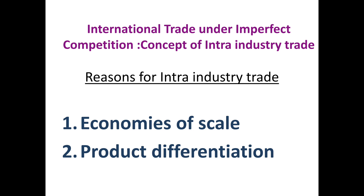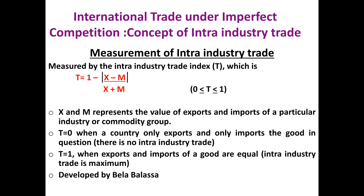That's why we are dealing with international trade under imperfect competition. Now, how to measure intra-industry trade? One method has been suggested and popularized by Balassa, in which he measured intra-industry trade by using an intra-industry trade index, where T = 1 minus the absolute value of (exports minus imports) divided by (exports plus imports). Here, X and M represent the value of exports and imports of a particular industry or commodity group. If T is 0, there is no intra-industry trade and entire trade is inter-industry. If T equals 1, intra-industry trade is 100% or maximum. As T approaches 1, the trade pattern becomes more and more intra-industry in nature.